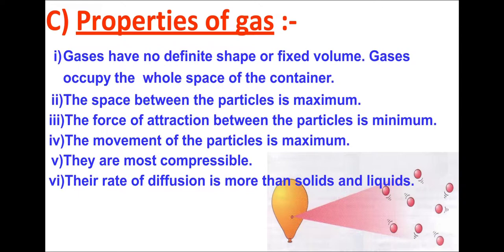Here is an image of a balloon in which air particles or gas is present. You can see the particles are too far from each other, so they have maximum space between them. Because the particles are so far apart, the force between them is too less — it is minimum. The movement of gas particles is maximum; because of the high space, particles have maximum capacity to move within the container.